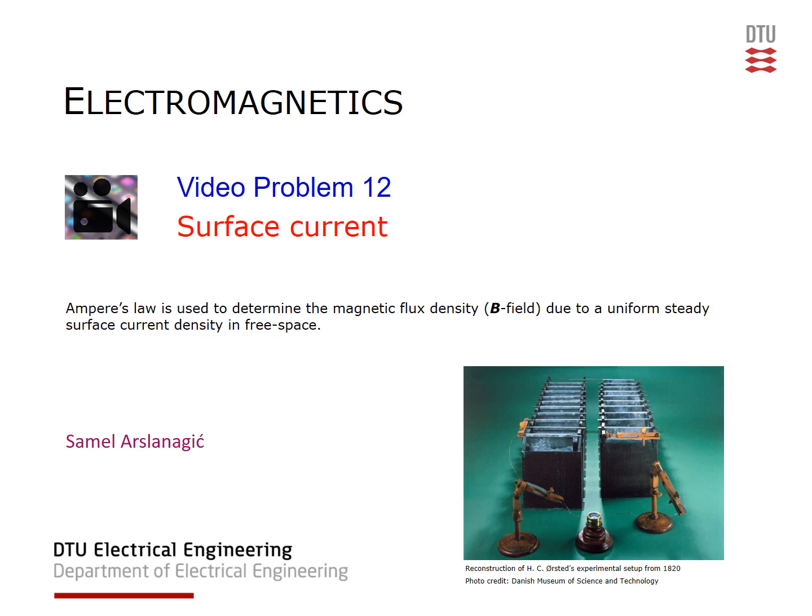So welcome to video problem 12. The objective here is to get the B field due to a uniform steady surface current density residing in free space. We are going to use Ampere's law for this purpose.